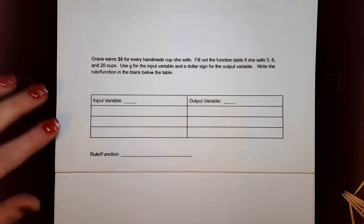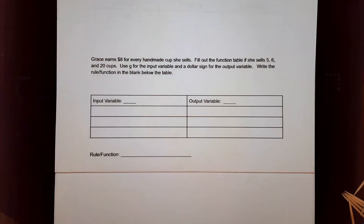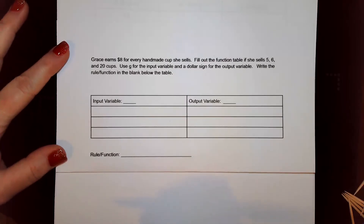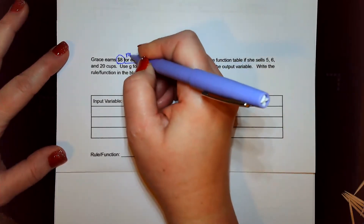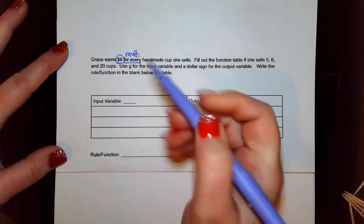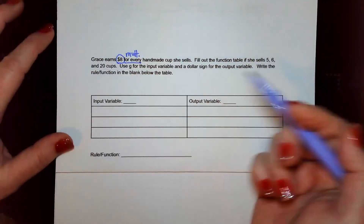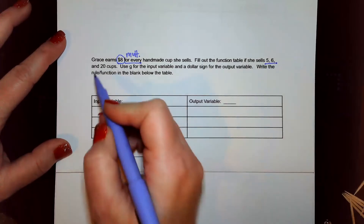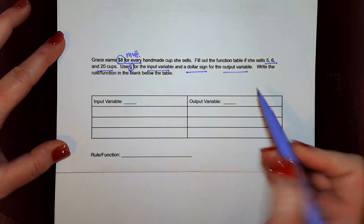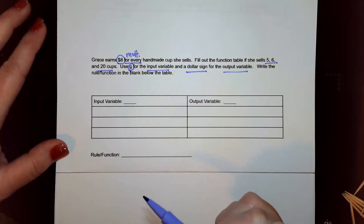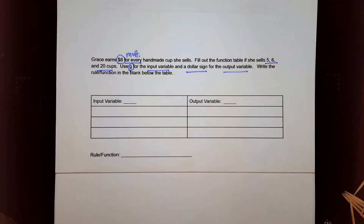Let's look at a word problem. Grace earns eight dollars for every handmade cup she sells. Fill out the function table if she sells five, six, and twenty cups. Use g for the input variable and a dollar sign for the output variable, then write the rule or function in the blank below the table. 'For every' is a good indicator we're probably going to do some multiplication.